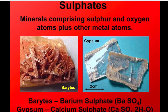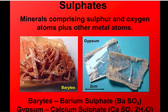With sulfates, again we see metals bonded with sulfur, but in addition to this, we see oxygen as well. Barite — barium sulfate — is a very useful mineral with a variety of different uses. Gypsum, again another very useful mineral, particularly for making things like plaster, is calcium sulfate.